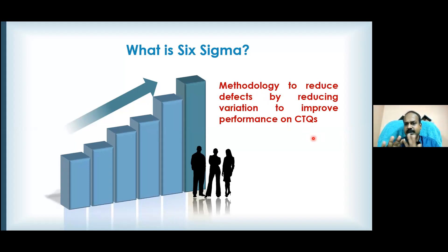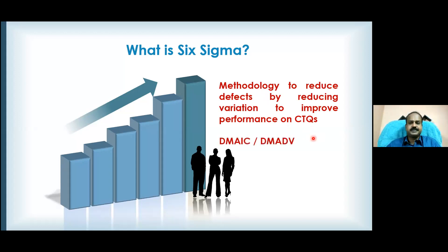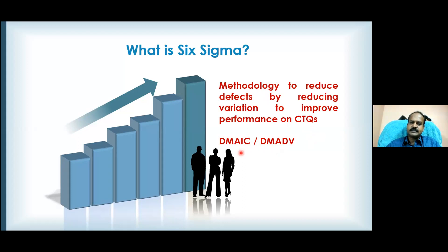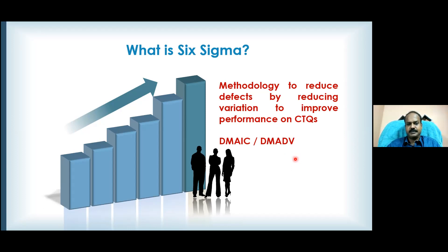If the CTQ metric never changes, my customer satisfaction also never changes. There are two approaches: one is DMAIC, another is DMADV. DMAIC is to reduce defects and improve the process. DMADV is for new product development, otherwise called Design for Six Sigma.